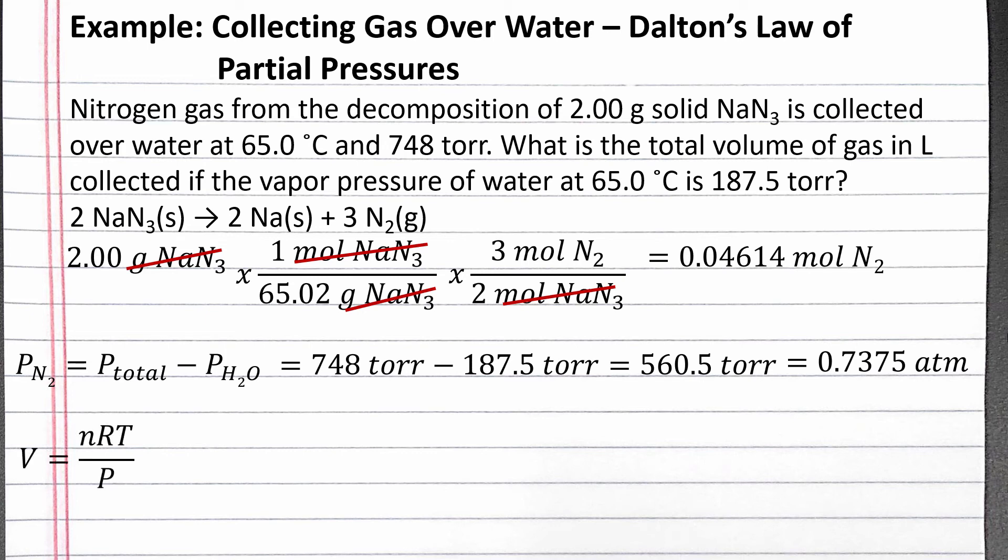If we rearrange the ideal gas law equation to solve for volume, we get volume equals moles of nitrogen gas times the ideal gas law constant times absolute temperature divided by the partial pressure of nitrogen gas.